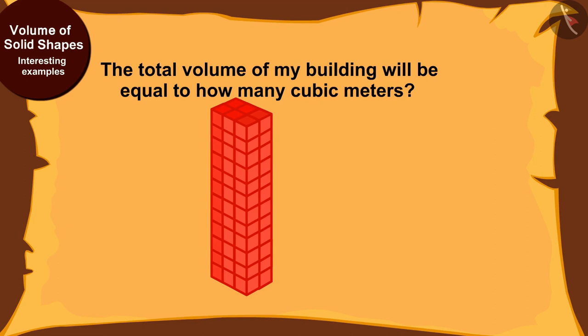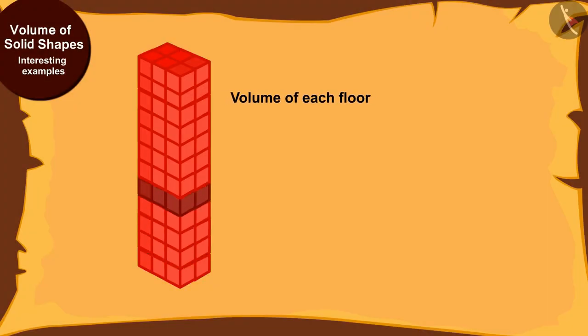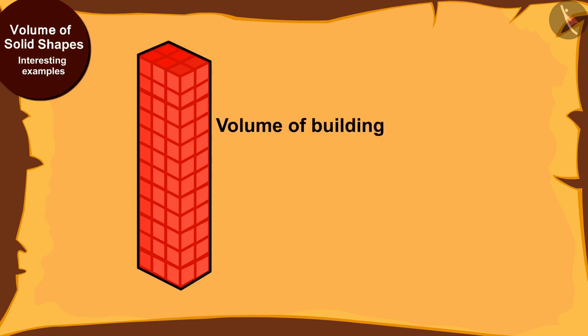Find the answer quickly by stopping the video. The volume of each floor of the building is equal to 162 cubic meters and there are 12 such floors in the building. This would mean the volume of the entire building will be 162 multiplied by 12, that is 1944 meters cube.